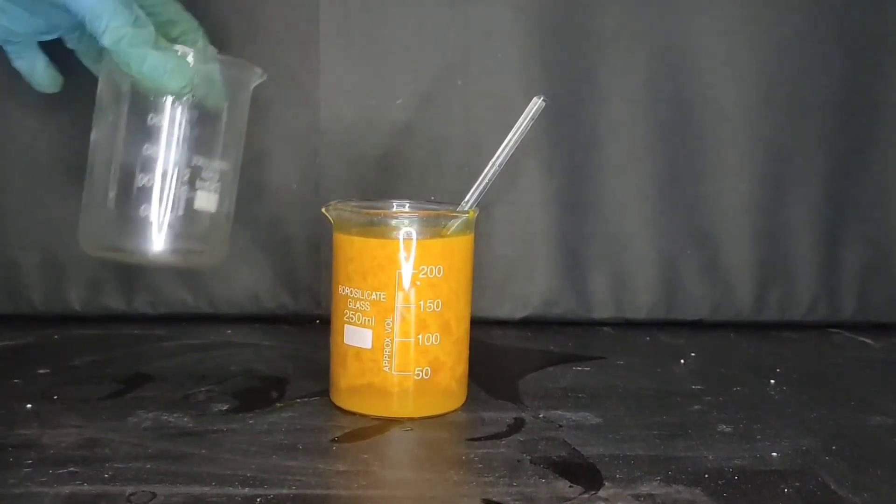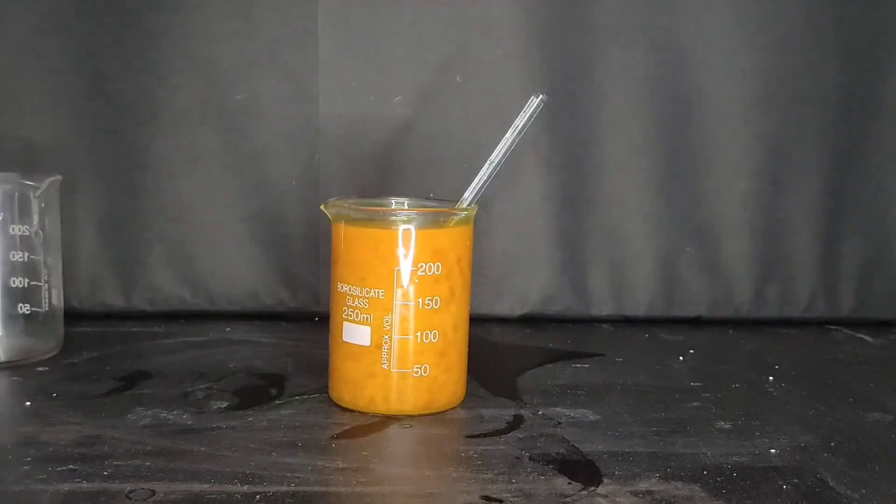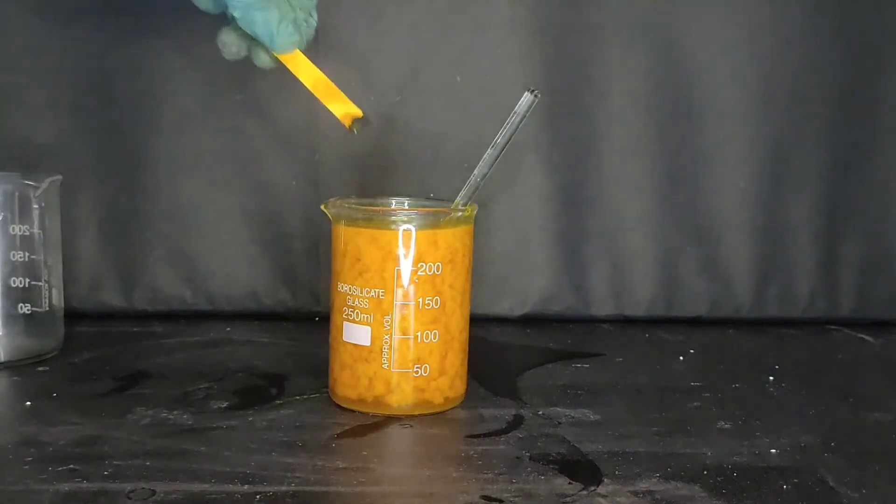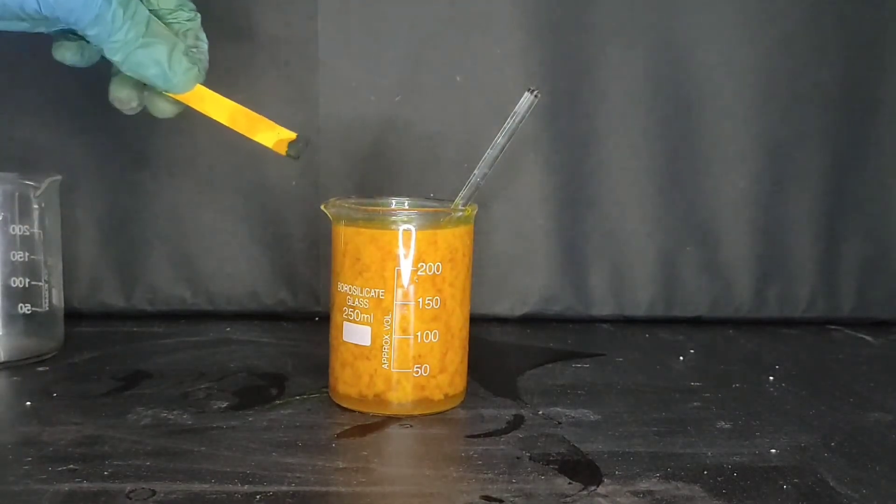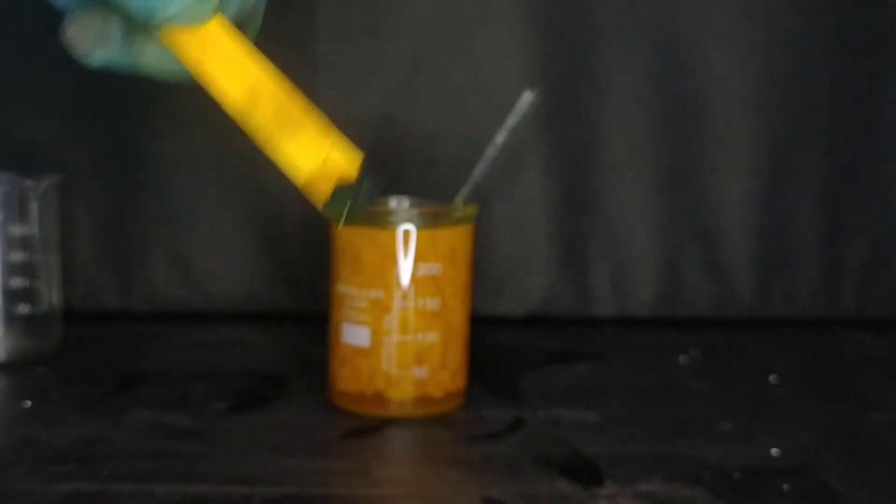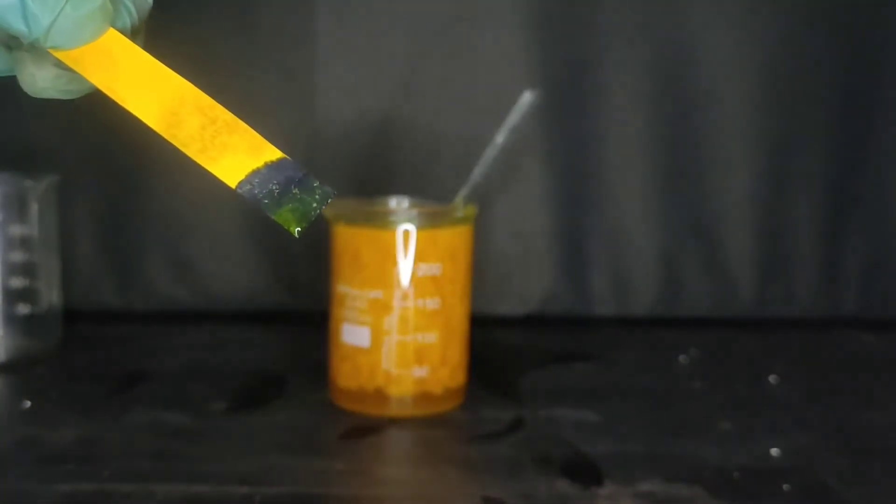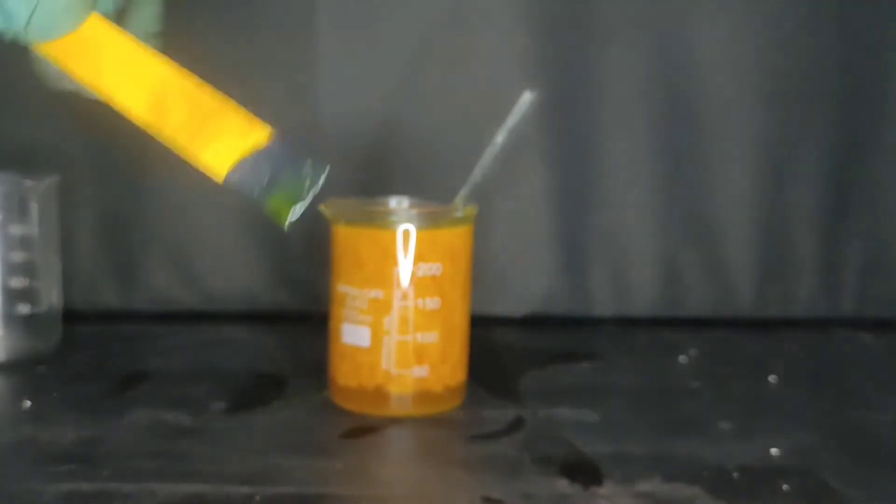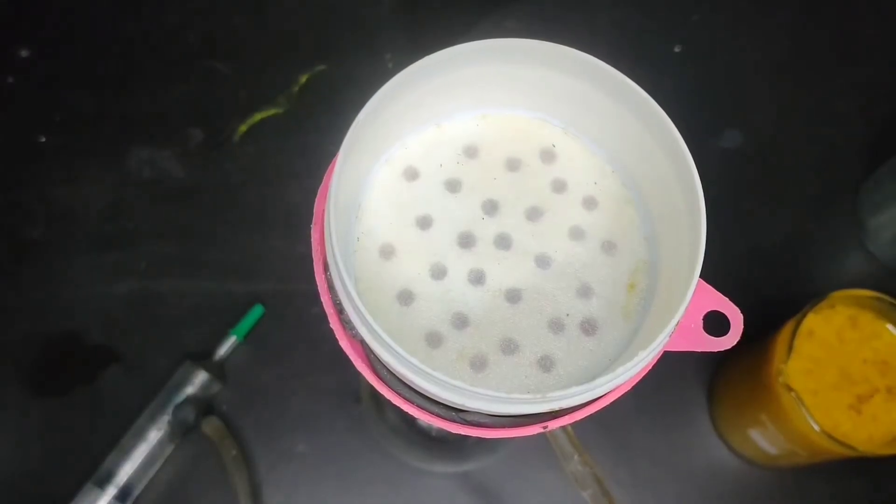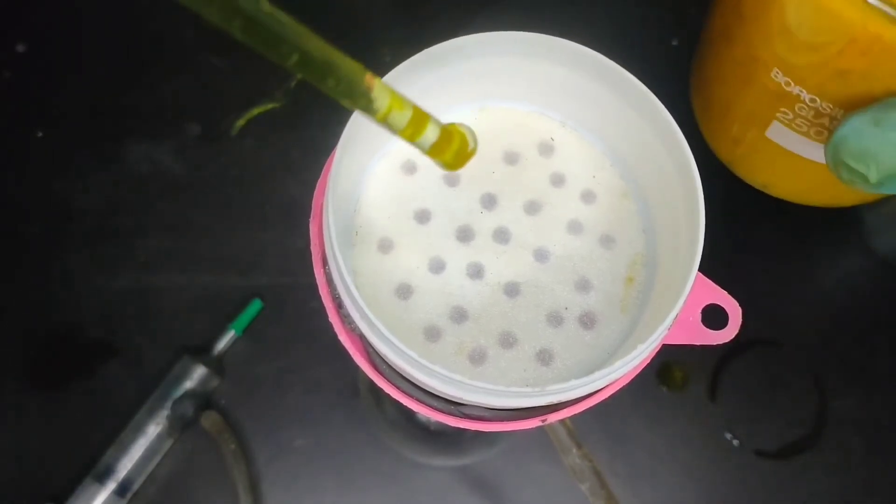I am adding some more 5% sodium hydroxide solution that I had, and then I will check the pH of the solution. You can see that the pH of the solution is highly basic, which corresponds to the pH of 13 or 14. This precipitate was filtered off using vacuum filtration.